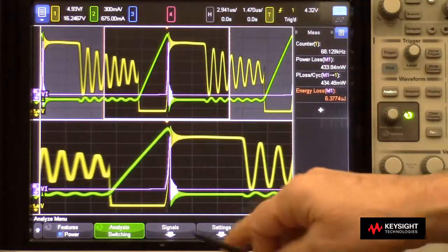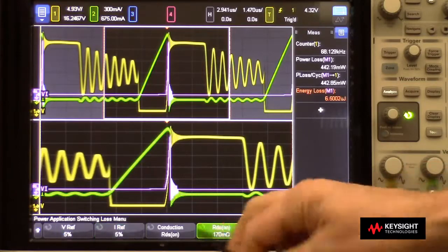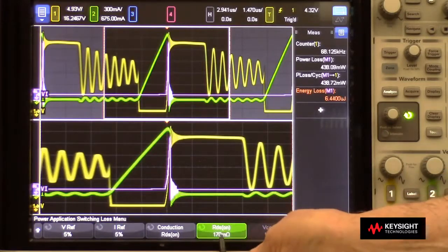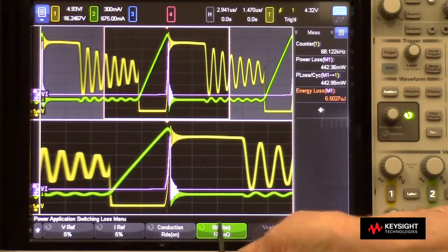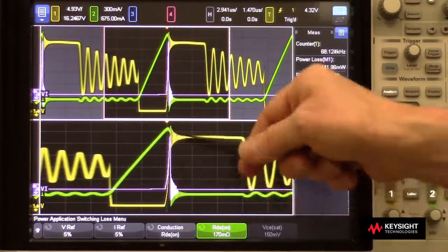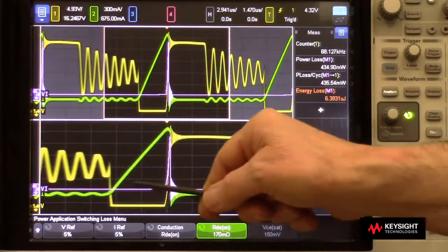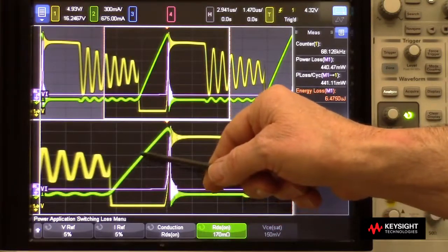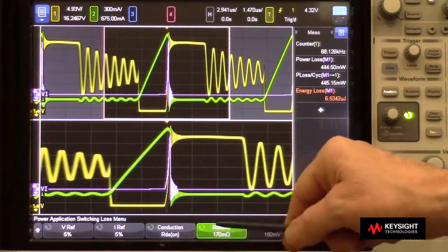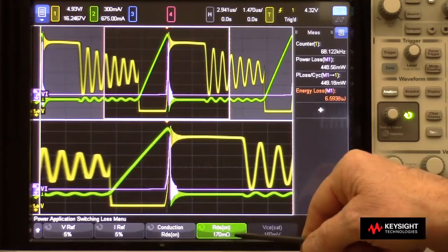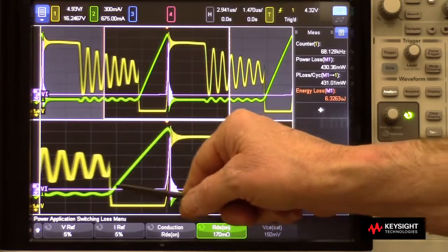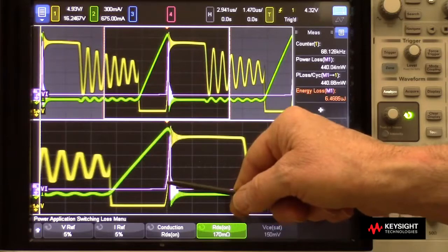So what the scope is doing, we can go into the settings menu. You can see that it's plugged in at 170 milliohms. And now the purple waveform you see is the power loss waveform. During the conduction phase, it's multiplying current squared times the measured value of RDS to come up with the power waveform during that phase.